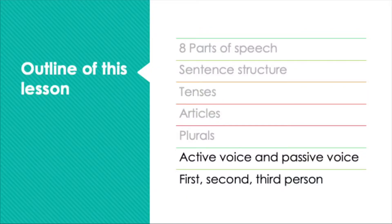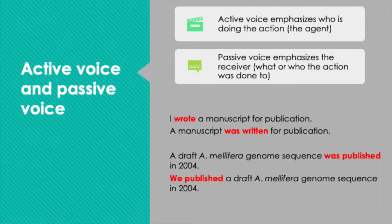Now that we have covered tenses, articles, and plurals, it's time to move into the last part of this lesson. We'll talk about active voice, passive voice, and first, second, and third person. Active or passive voice is determined by the verbs that are used. Active voice emphasizes who is doing the action — that's what we call the agent — whereas passive voice emphasizes the receiver, or what or who the action is being done to.